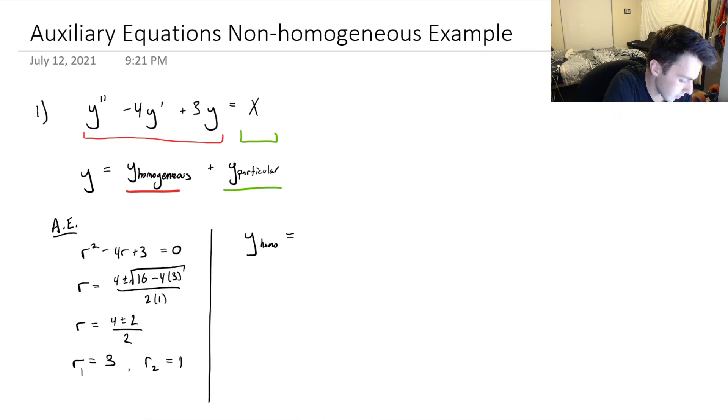So it will be A times e to the 3x plus B times e to the x. So that is our general form of the homogeneous part of our solution.